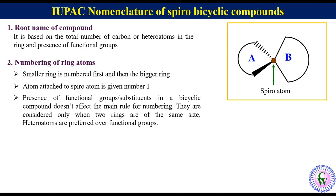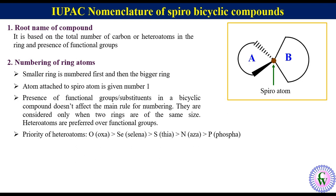Here is the decreasing order of priority of heteroatoms: oxygen has the highest priority, after that selenium, followed by sulfur, nitrogen, and phosphorus, which is of the lowest priority.